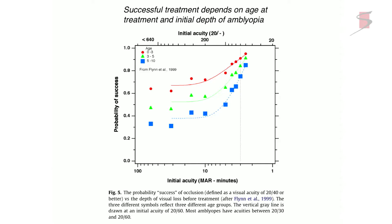Any successful treatment will depend on the age at which treatment is started, the age at which the condition first occurred, and the starting visual acuity. A mild amblyope to begin with is much easier to get a good visual outcome from. Different colors here represent kids in different age ranges, with the best outcomes coming from the youngest kids with the best starting acuity.